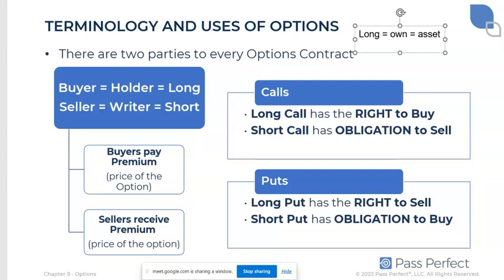On the other side of the transaction — if someone buys something, someone else has to sell it to them. The option seller, also known as the option writer, is short the option. From their perspective, the seller who received the premium has entered into a contract, and now they have to do what the contract says if the option buyer asks them to. Short means to owe — like you're coming up short. This is a liability. The liability of an option writer is they have to live up to the terms of the contract. Depending how things go, that could be a very big liability.